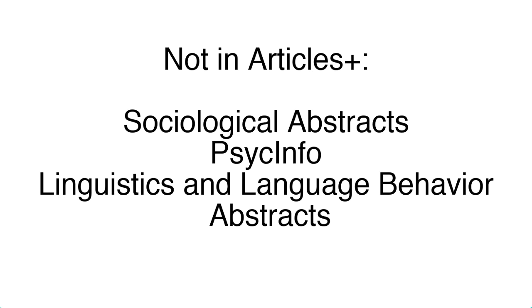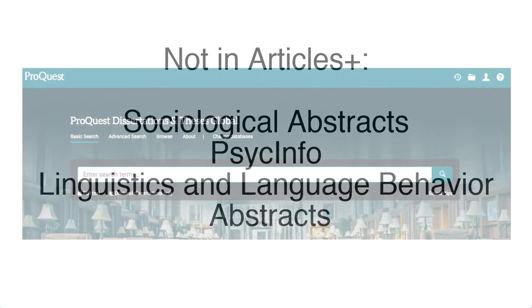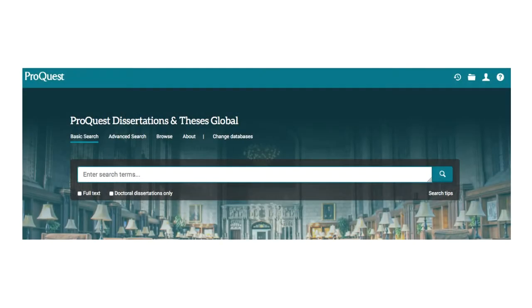You will not find ProQuest databases such as Sociological Abstracts, PsychInfo, or Linguistics and Language Behavior Abstracts, though articles found in these databases may well be found in other databases covered in Articles Plus. What you will definitely not find are links to the full-text of ProQuest dissertations.